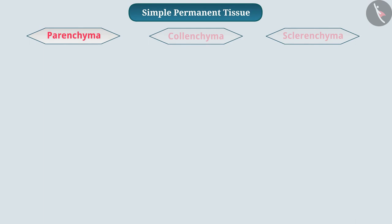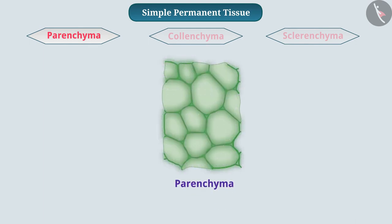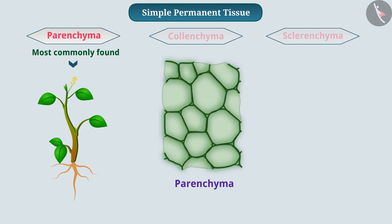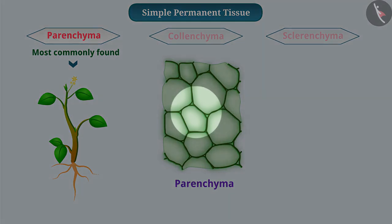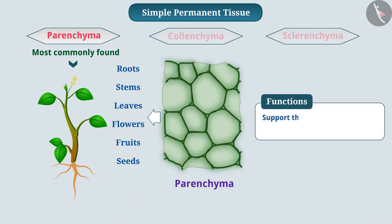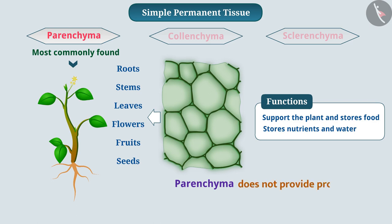Some layers of cells form the basic packing tissue called parenchyma. In plants, parenchyma is the most commonly found simple permanent tissue. This tissue is made up of living cells and has thin cell walls. These cells are often loosely packed and have free spaces between them. Parenchyma is found in almost all plant parts — roots, stems, leaves, flowers, fruits, and seeds. It serves to support the plant and stores food. Parenchyma in stems and roots also stores nutrients and water, so these cells have a large vacuole. Parenchyma does not provide protection to the plant.